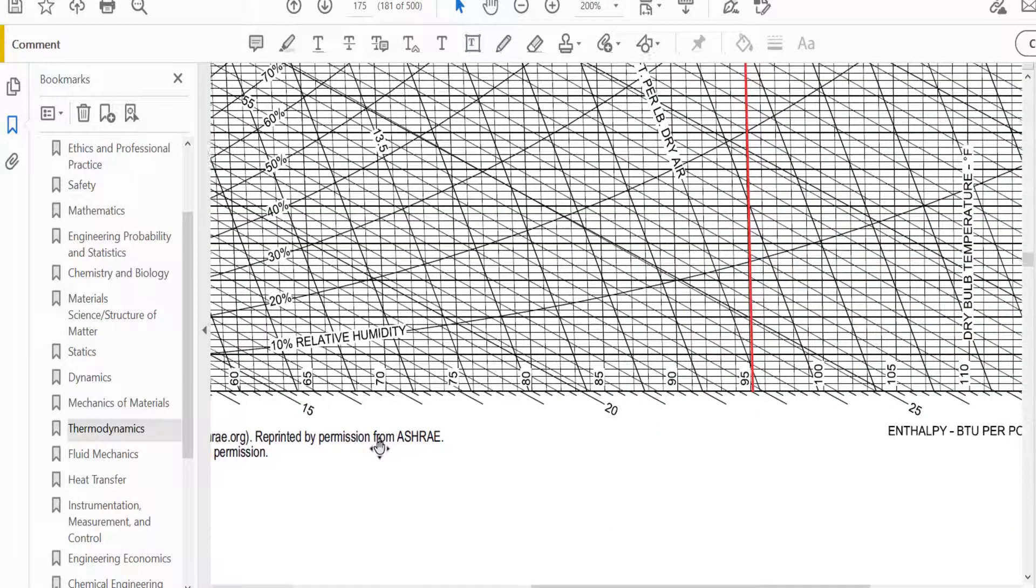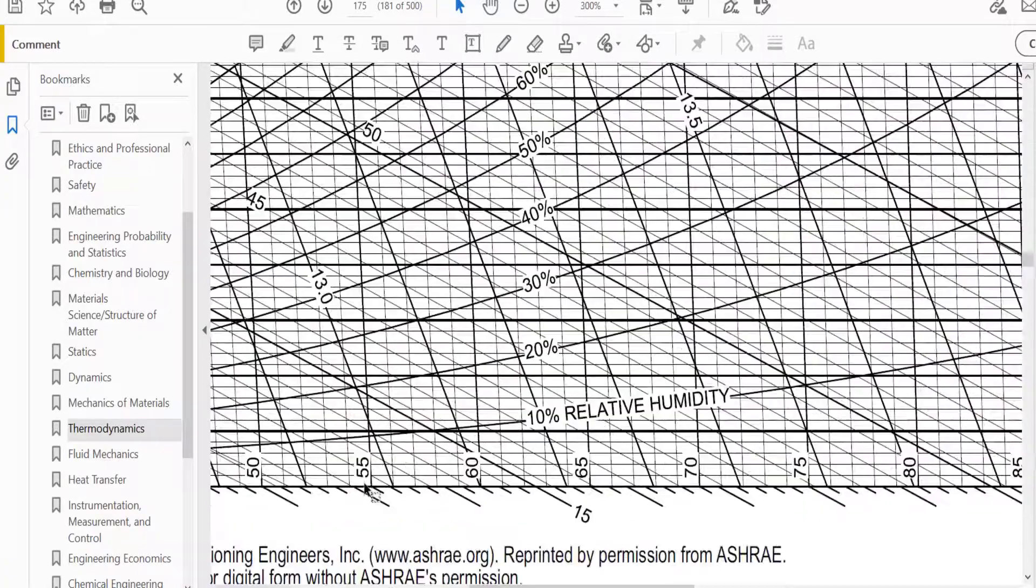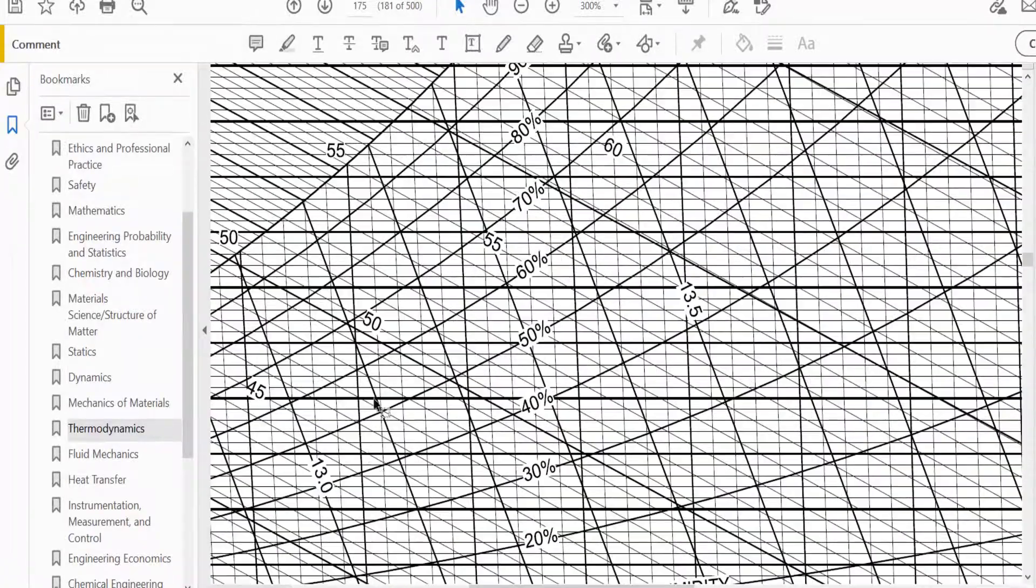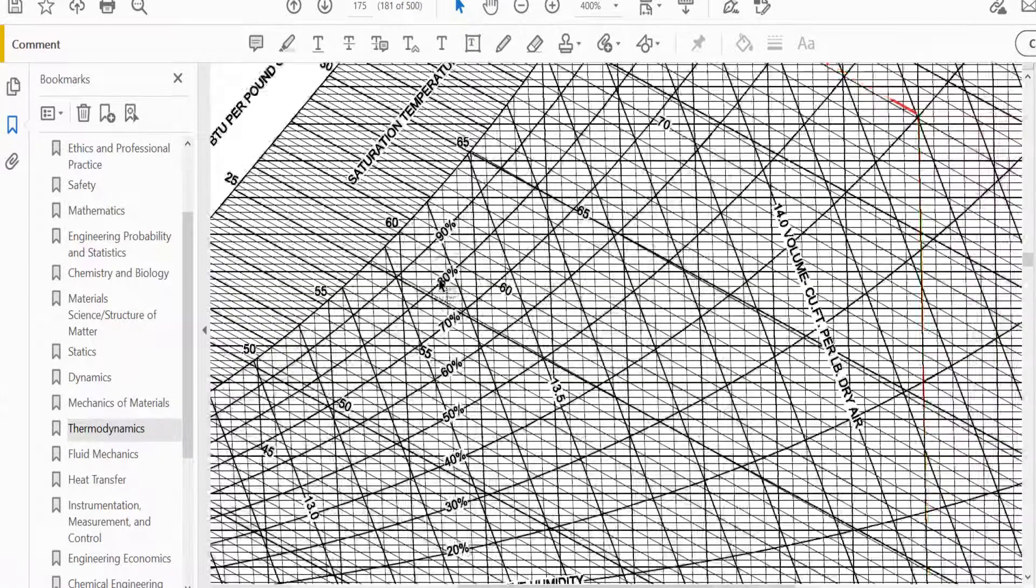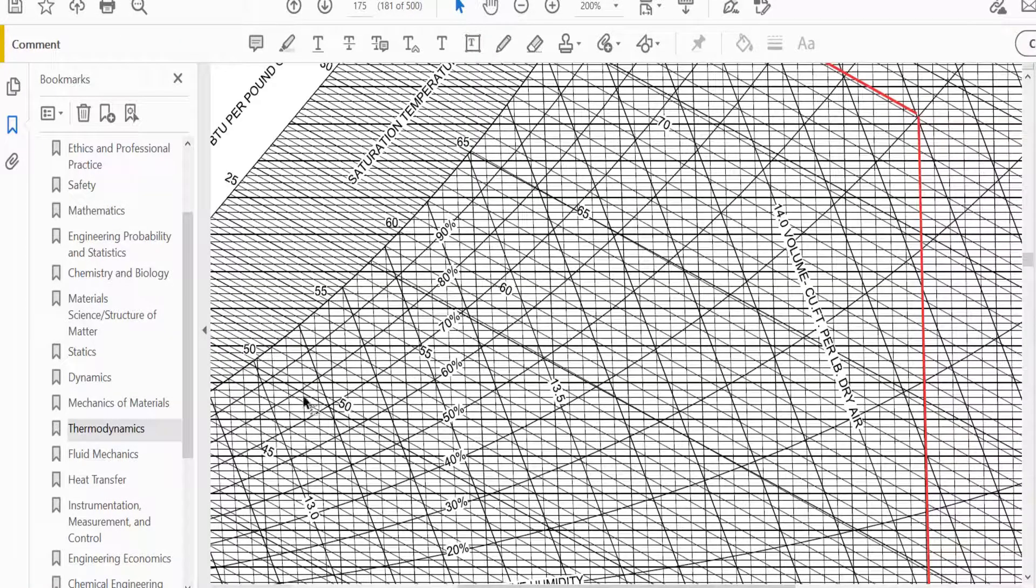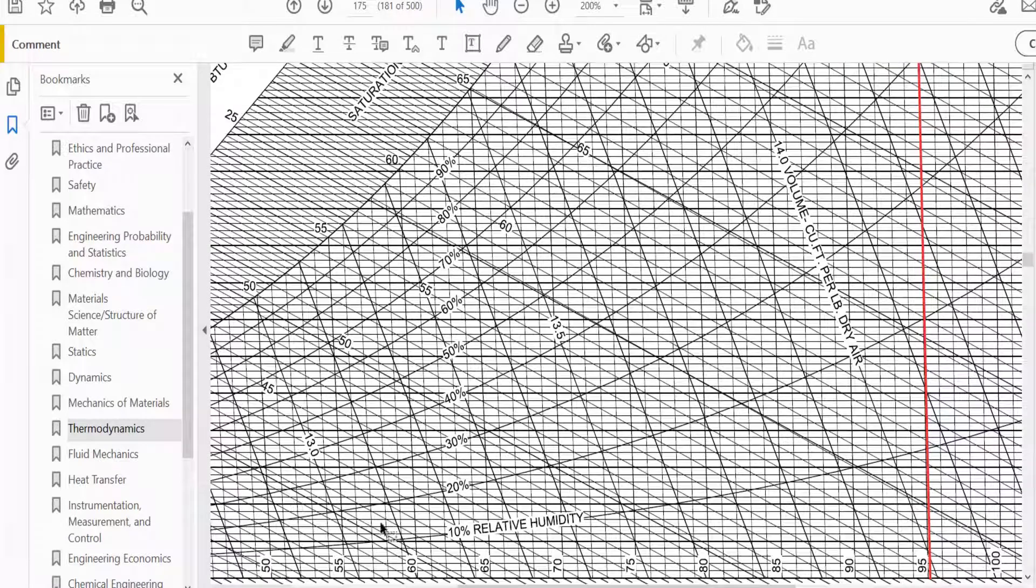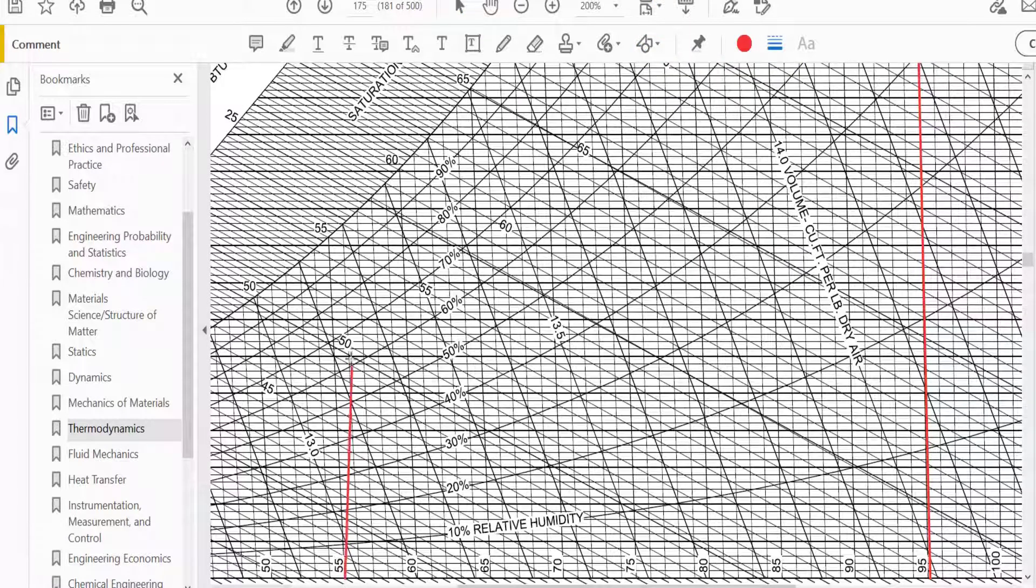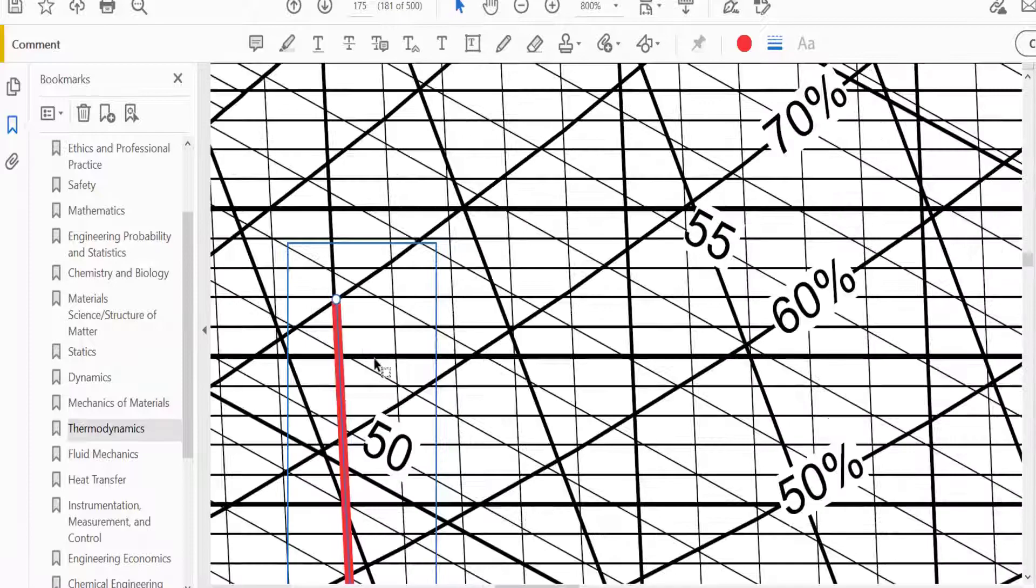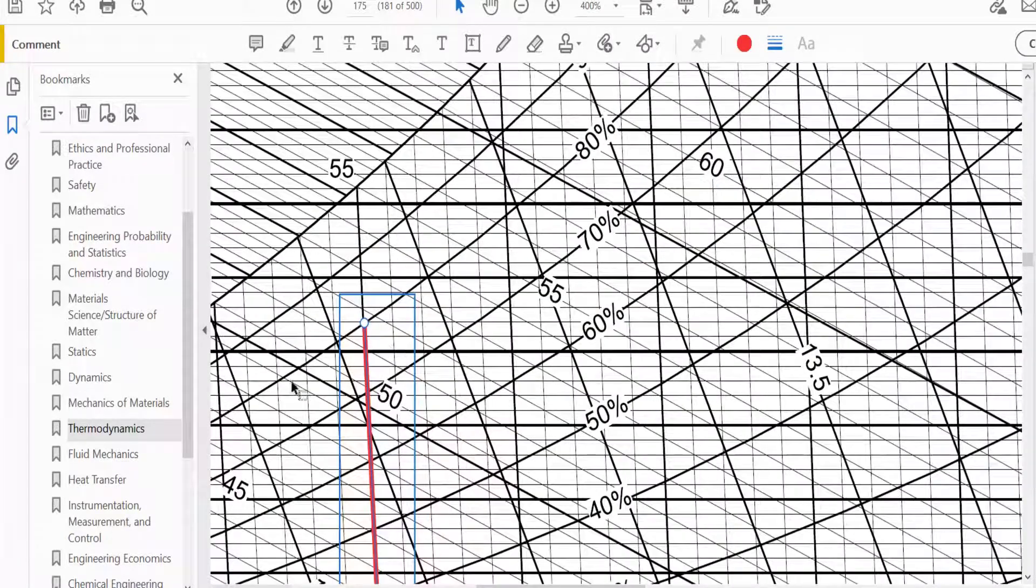We go to 55, 55 is here, and we have to intersect 80%. The 80% line is this, right, 80%. So it's going to be this line, this line here. So let me use the line, 55, we go up to 80%, it could be somewhere here. So we intersected the right line, I believe.